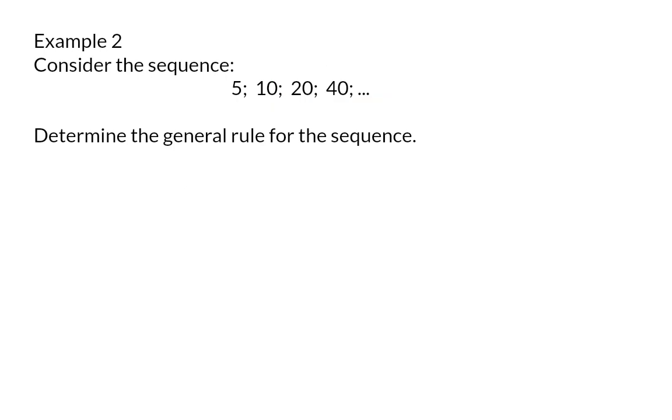Example 2. Consider the sequence and determine the general rule. Here you can see that once again we have a constant ratio because we multiply by 2 every time. So again to write my general rule I'm going to start off with my first term of 5 and multiply that by 2 a certain number of times. But once again I will multiply by 2 one less time than the position of the term because for my first term I haven't multiplied by 2 yet.